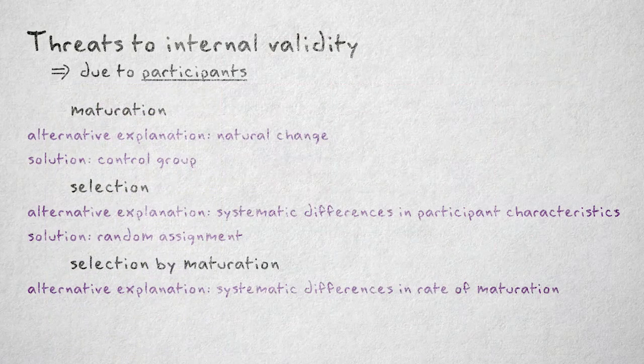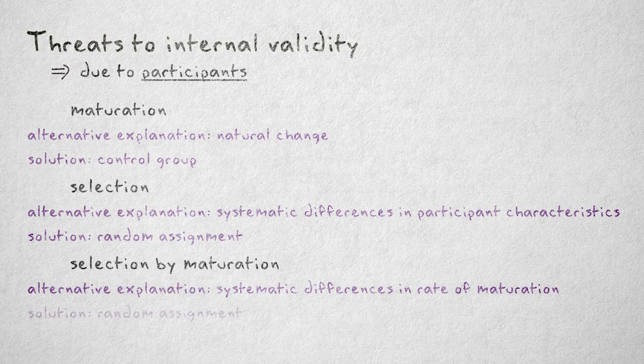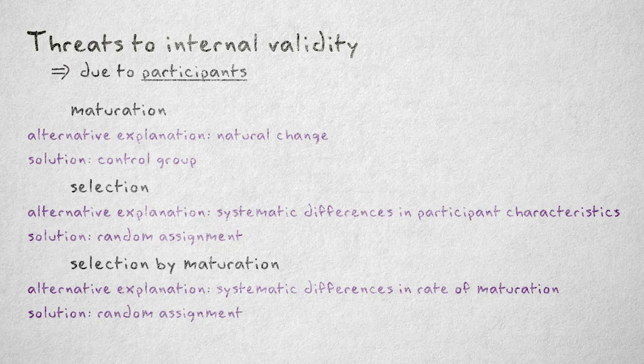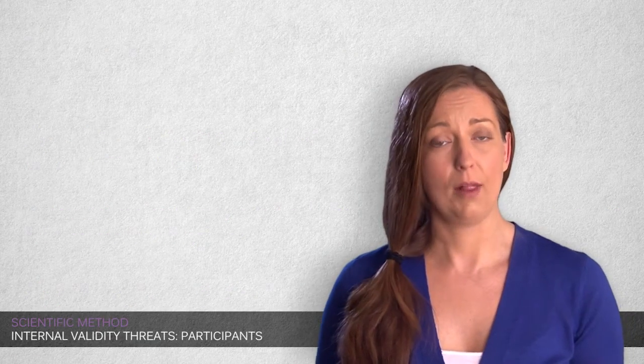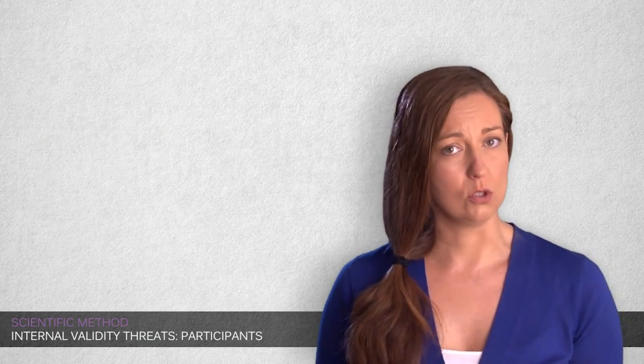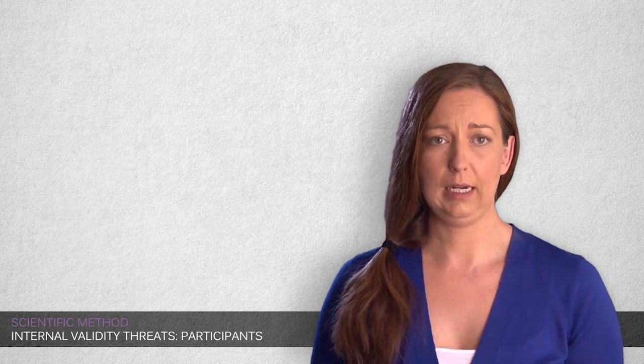Just like selection on its own, the threat of selection by maturation can be eliminated by randomized assignment to groups. So you see that the research design we choose, for example adding a control group, and the methods we use, for example random assignment, can help to minimize threats to internal validity.